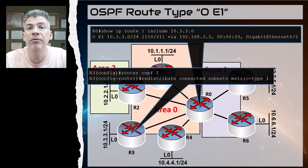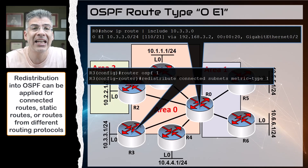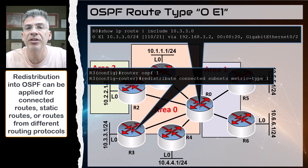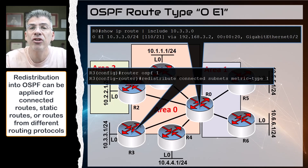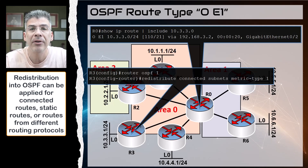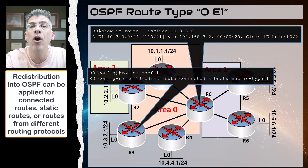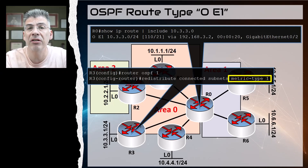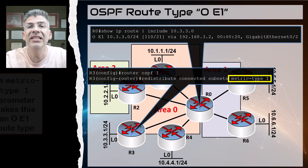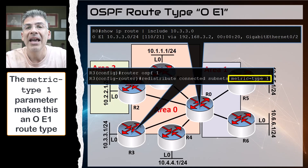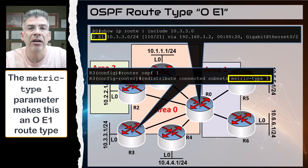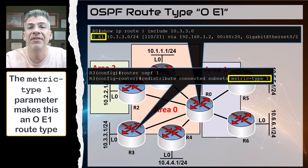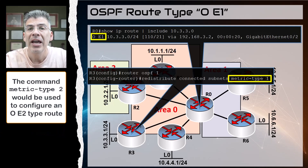You can redistribute from connected, from static, and from other routing protocols as well, and the same external OSPF route type will still be used for all of these. We also have additional commands here which are the metric type 1 parameters. This is what defines this route type as an OE1 OSPF route type. If this were metric type 2, then it would be an E2 type.